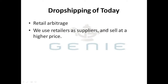Dropshipping today has basically become retail arbitrage. Retail arbitrage is simply buying retail and selling it for a higher retail price, making a profit margin. For those who have never dropshipped before — it works. For example, I have a specific chest of drawers that I sell and supply from a store. When it's on sale, the supplier sells it for $39.99 and I sell it for about $55.